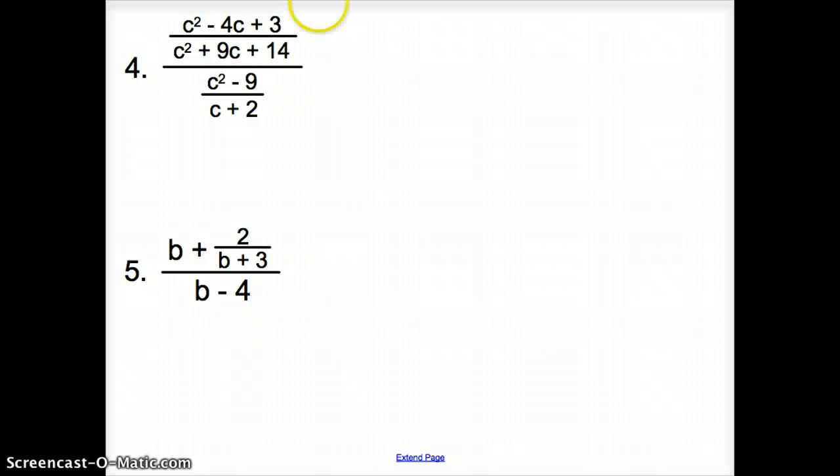With four, it looks a little bit trickier, but again, what does this fraction bar mean? It means division. What are we dividing by? We are dividing by c squared minus 9 over c plus 2. We're still dividing by this, so let's go ahead and flip and multiply.